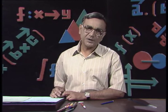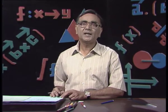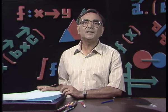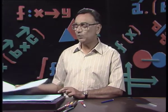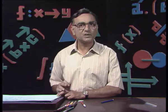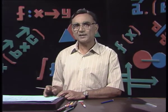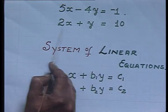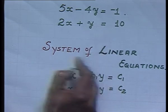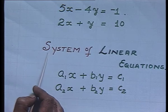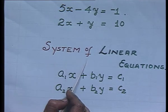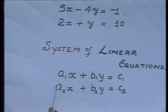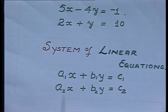That was one equation and we had a quick recap of plotting it. Now, if I have two equations — 5x minus 4y equals minus 1 and 2x plus y equals 10 — these two linear equations together form a system of linear equations. The general format is: a₁x plus b₁y equals c₁, and a₂x plus b₂y equals c₂.